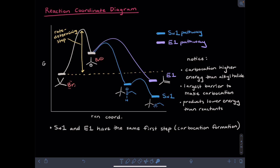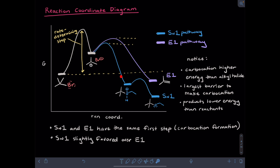Notice that the mechanisms for substitution and elimination start out the same, with loss of leaving group and carbocation formation. Also notice that from the carbocation, the barrier going to the substitution product is slightly lower in energy than the barrier going to the elimination product. The difference is only slight, which is why we observe both products.